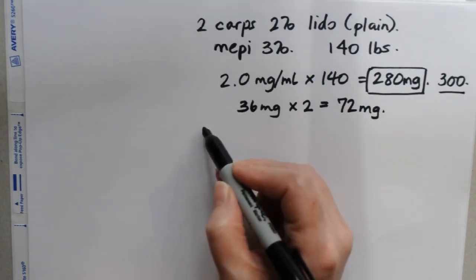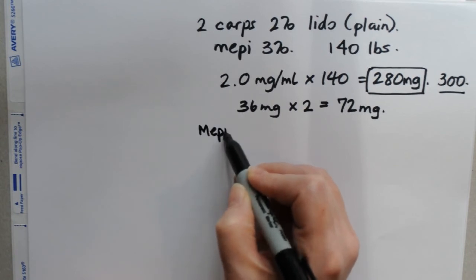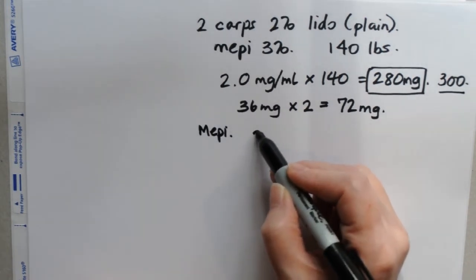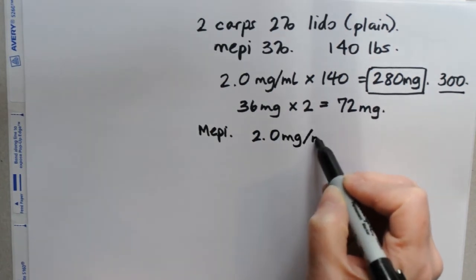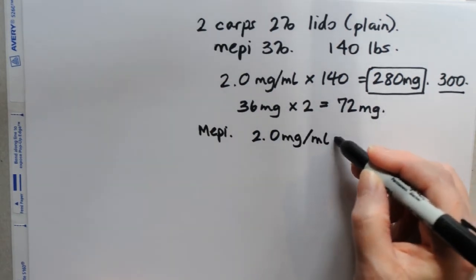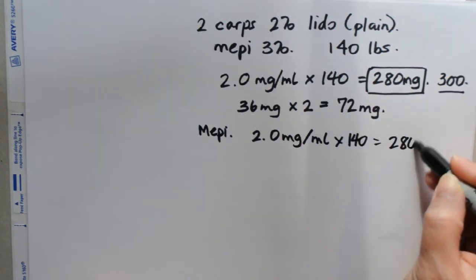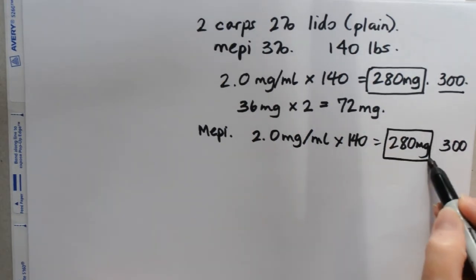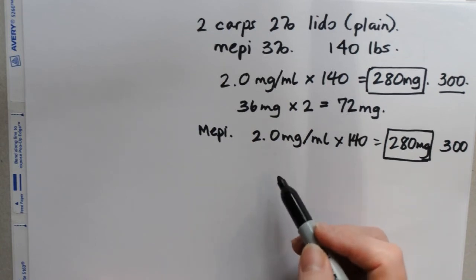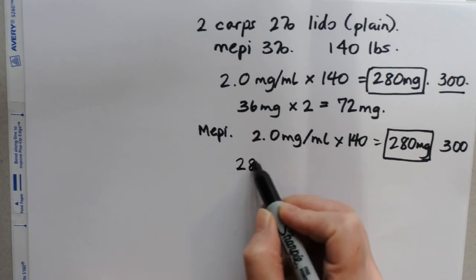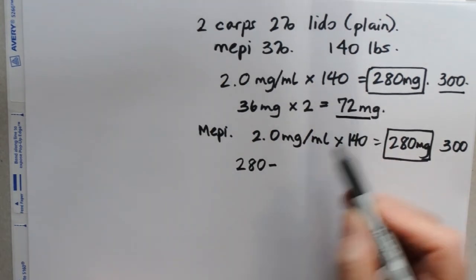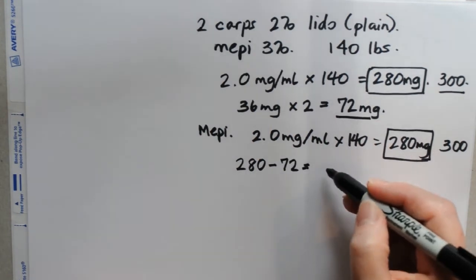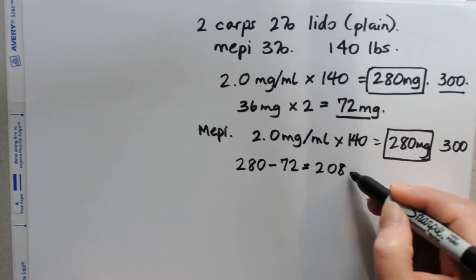So the next thing we need to calculate is what is the upper dose of mepivacaine. And that factor, coincidentally, is also 2.0 milligrams per milliliter. And we times that by their weight, and we also get 280 milligrams. And coincidentally, the upper limit for mepivacaine is also 300, and so we take the lesser number. Our maximum dose of mepivacaine is 280 milligrams. So now we're going to take our maximum total dose that we can give them, minus what we already have given them, and we end up with 208 milligrams.